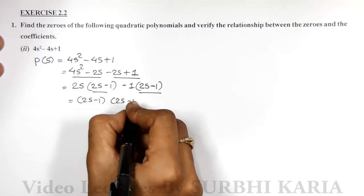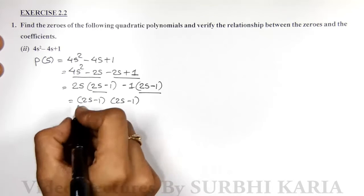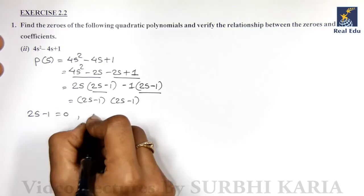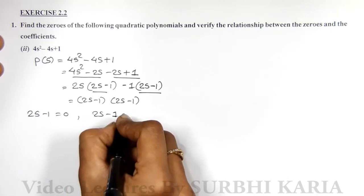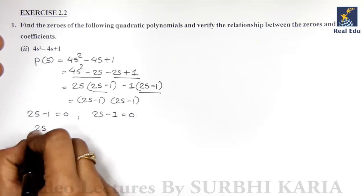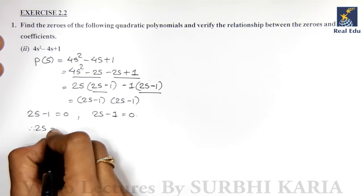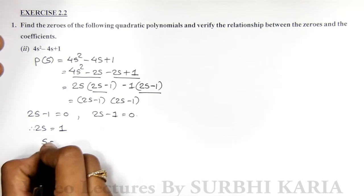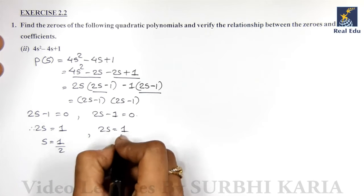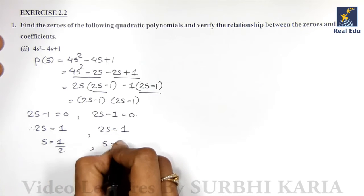So (2s - 1)(2s - 1). This equation can be rewritten as 2s - 1 = 0 and 2s - 1 = 0. Therefore, 2s = 1, s = 1/2. Here also, 2s = 1 and s = 1/2.